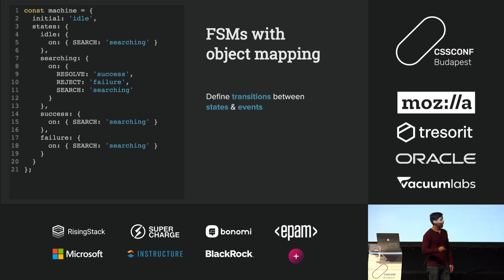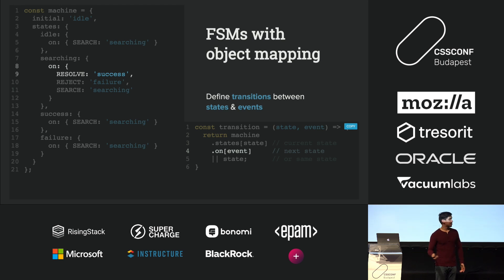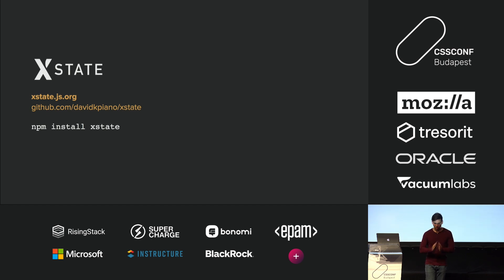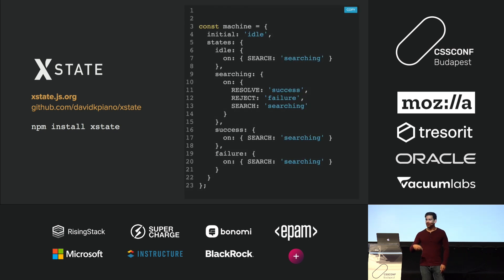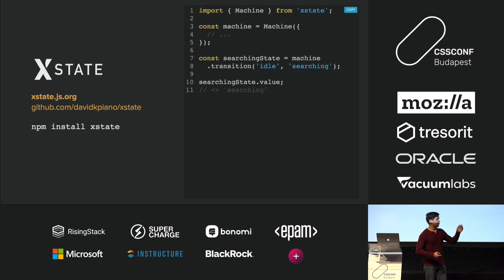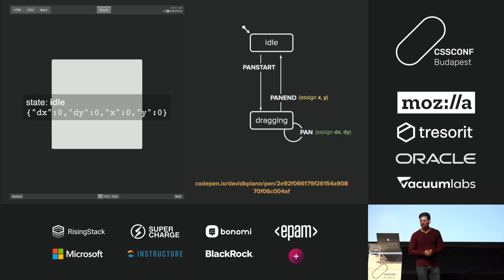Personally I find switch-case statements a bit verbose, so I prefer object mapping instead — it looks like a big JSON object where you have a state like searching, look at the on property to see which events occurred, and find a mapping to the next state, defaulting to the current state if there's no match. I also wrote a library for this called XState. To use XState, you have a machine function that takes in the object configuration and gives you automatic transitions so you don't need to code that transition function yourself.